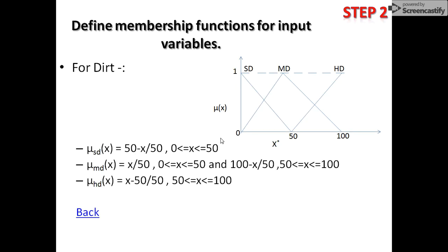In the second step, we have to define membership functions for input variables as well as for output variables. The first input variable is dirt. For defining the membership function for it, we represent a graph with the input variable as x. We have three specific descriptors: small dirt, medium dirt, and high dirt, represented with values 0, 50, and 100 — though you can take 0, 60, 100 or 0, 40, 100 as per your requirement. We are using a triangular membership function, and we take the first triangle.